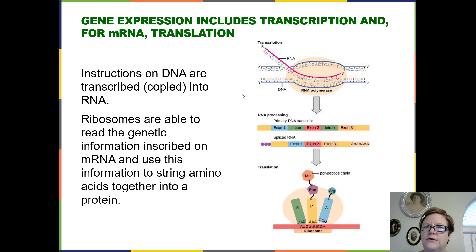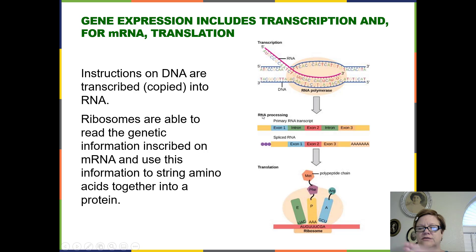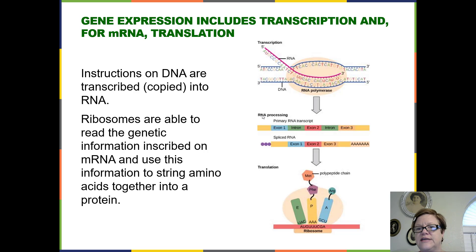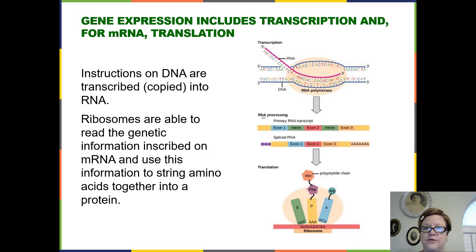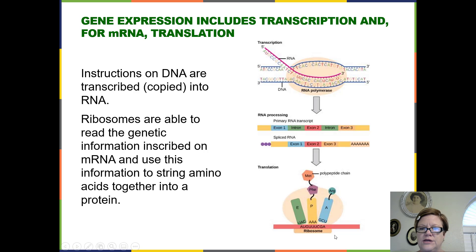After the RNA is made, there are some steps called RNA processing. After the RNA is initially made, there is some trimming and modifications that happen, still in the nucleus. The final product — the mature mRNA, messenger RNA — then leaves the nucleus, shown by this gray arrow going out into the cytoplasm.